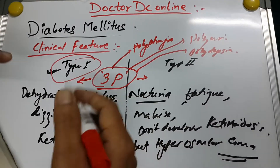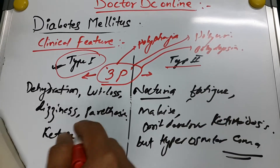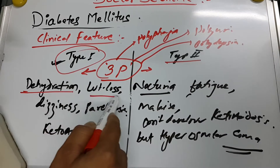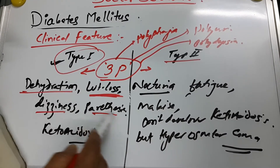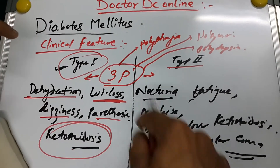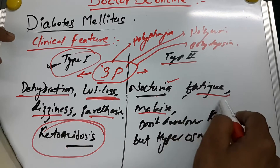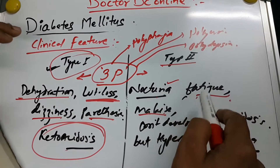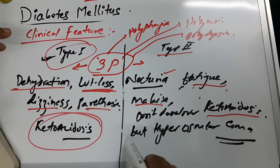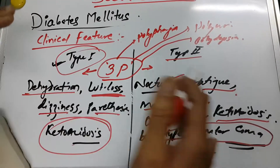Type 1 diabetes mostly has a juvenile onset — it presents in children. Type 2 is mostly in adults, particularly obese people. In Type 1, you see dehydration, weight loss, dizziness, paresthesia, and most commonly ketoacidosis. In Type 2, you see 3P plus nocturia, fatigue, and malaise. Even though they are obese, they don't develop ketoacidosis, but they can develop hyperosmolar coma.